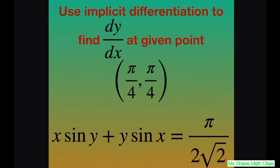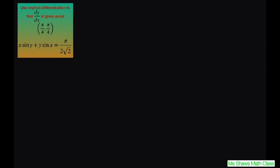Our equation is x·sine of y plus y·sine of x equals π/2 times square root of 2. So let's go ahead and do this.